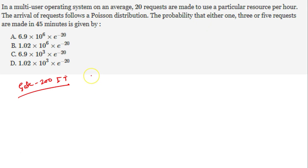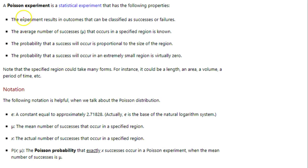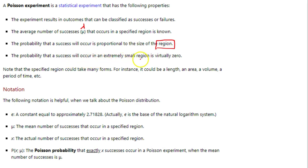In Poisson distribution, we have some variables which we use to find the formula. Poisson distribution is a statistical experiment with the following properties: it is used to find the number of successes in a given region or time period. The experiment results in outcomes classified as success or failure, and the average number of successes that occur in a specified region is known. The probability of success is proportional to the size of the region, and the probability of success in an extremely small region is virtually zero.